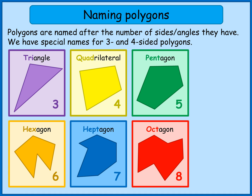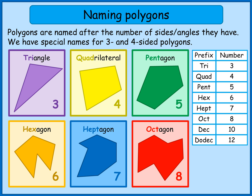So apart from triangles and quadrilaterals, every other polygon is named after the number of sides it has. You need to know pentagon, hexagon, heptagon and octagon. The next one's a nonagon for nine. For ten, you can see 'dec' for ten, so a ten sided shape would be called a decagon, and a twelve sided shape would be called a dodecagon. You probably don't need to go much further than that, but there are actually names for every polygon you would want to think of.